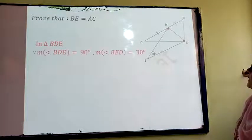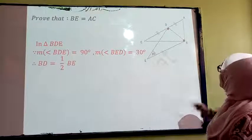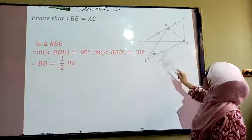this is a 30-60 degree triangle. Therefore, BD equals half BE.